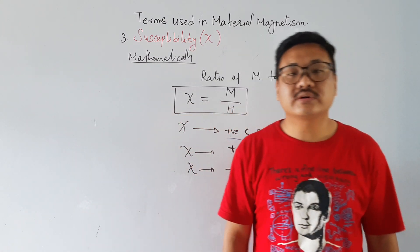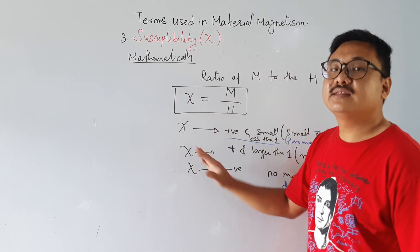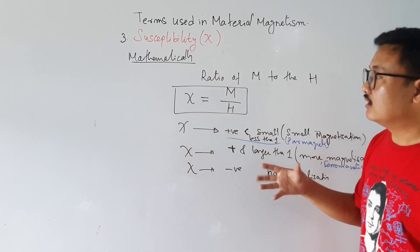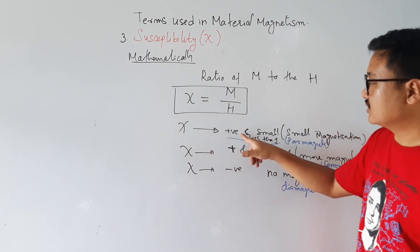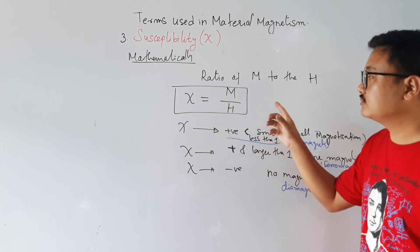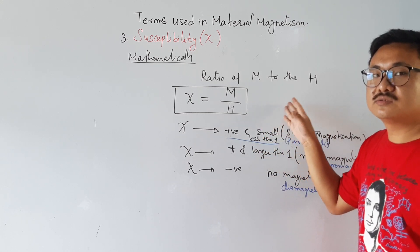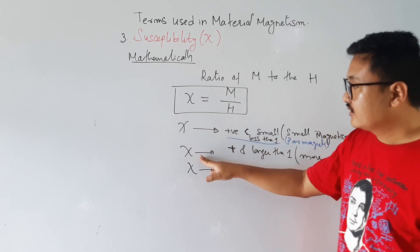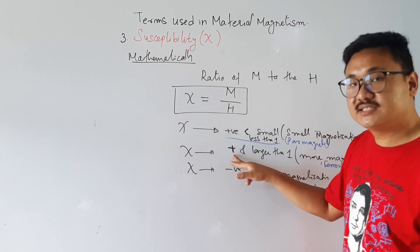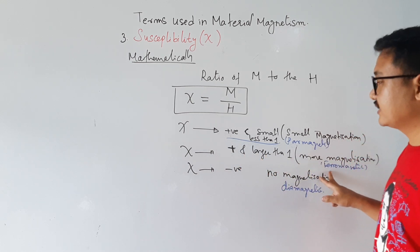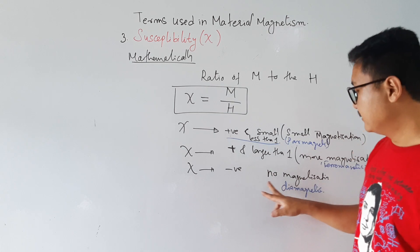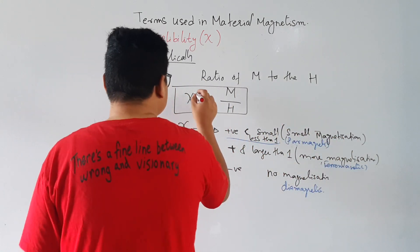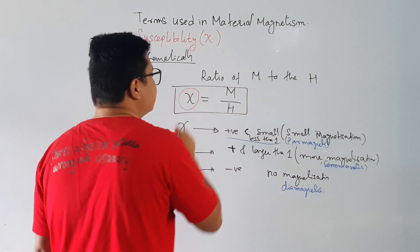We will go into more discussion of the values of Chi in later lectures, so this is just the introduction. If Chi is positive and less than 1 — for example 0.0034 or 0.0063 — the magnetic material is paramagnetic. If Chi is positive and larger than 1, it is ferromagnetic. If Chi is negative, there is no magnetization — that is diamagnetic. And Chi has no unit.